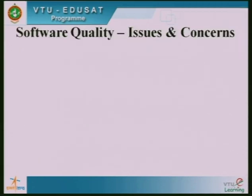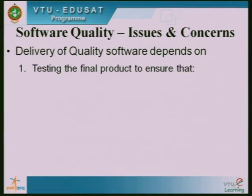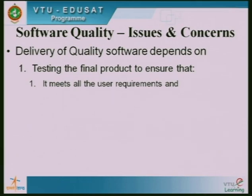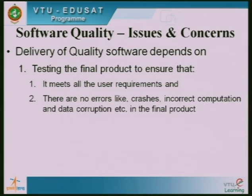Let us start with software quality issues and concerns. Delivery of quality software depends on testing the final product to ensure it meets all user requirements — this is the first and foremost quality issue. The software developed should meet all requirements — functional and non-functional. There should be no errors like crashes, incorrect computation, or data corruption in the final product. This we make sure by testing.